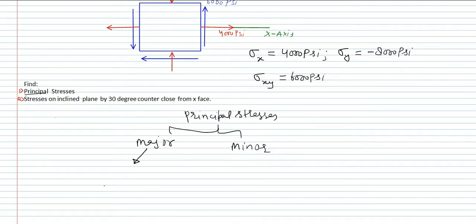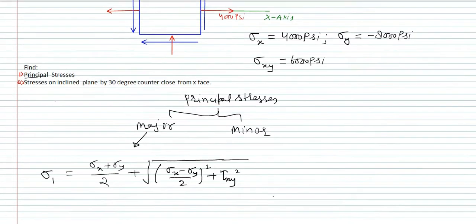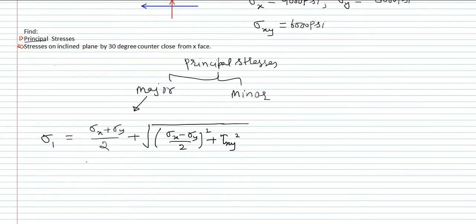The major principal stress sigma 1 is found using the formula: sigma 1 equals (sigma X plus sigma Y) divided by 2, plus the square root of ((sigma X minus sigma Y) divided by 2) squared plus tau XY squared.